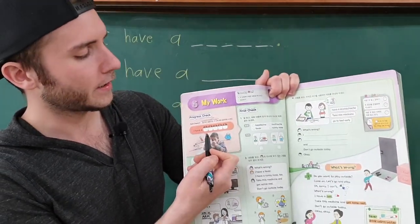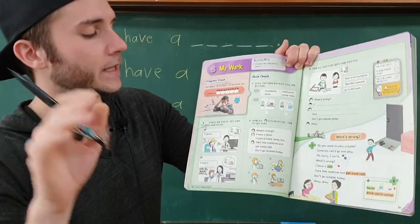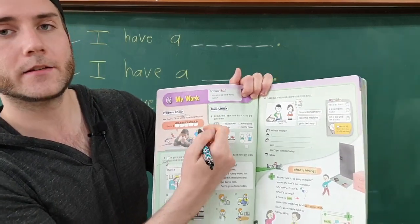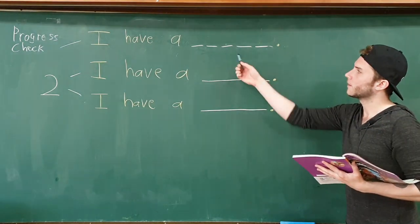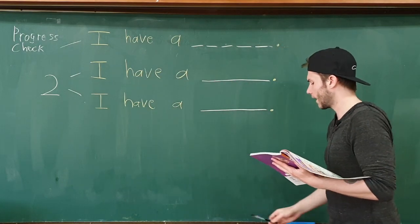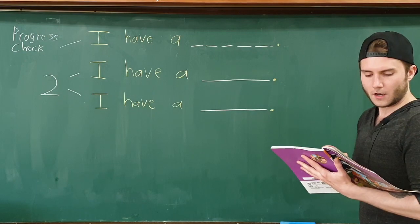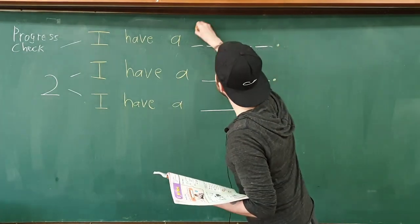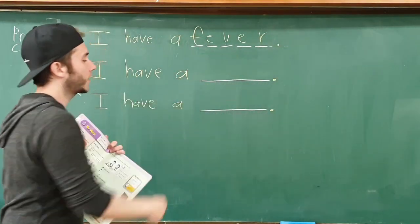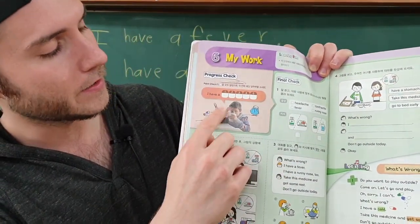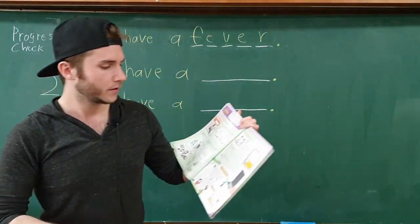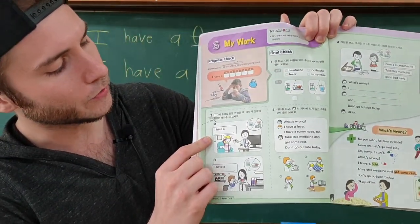He's saying 'I have a blank' and we have five letters that we need for this word. I want you to think about what is wrong and then write in the answer. The answer is 'I have a fever' — there are five letters in fever, and he's got an ice pack and his thermometer is pretty warm there.